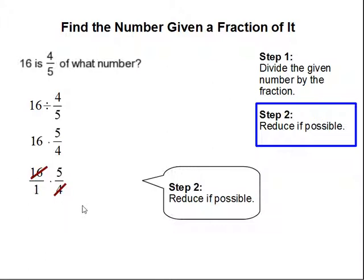16 and 4 can be reduced because 4 goes into both of them. 4 goes into 16 four times. 4 goes into 4 one time.